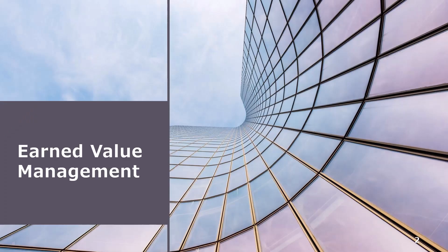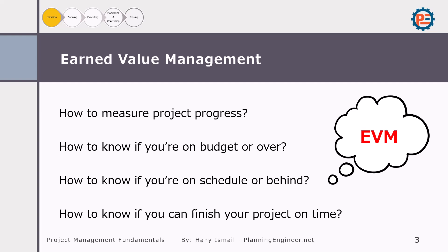Earned Value Management is a powerful project management technique used to measure project performance and progress. It integrates project scope, time, and cost to provide a clear picture of where the project stands in terms of budget and schedule. EVM helps answer several key questions: How to measure project progress? How to know if you are on budget or over budget? How to know if you are on schedule or behind schedule? How to know if you can finish your project on time or not? By using EVM, project managers can make decisions and take corrective action based on accurate data.